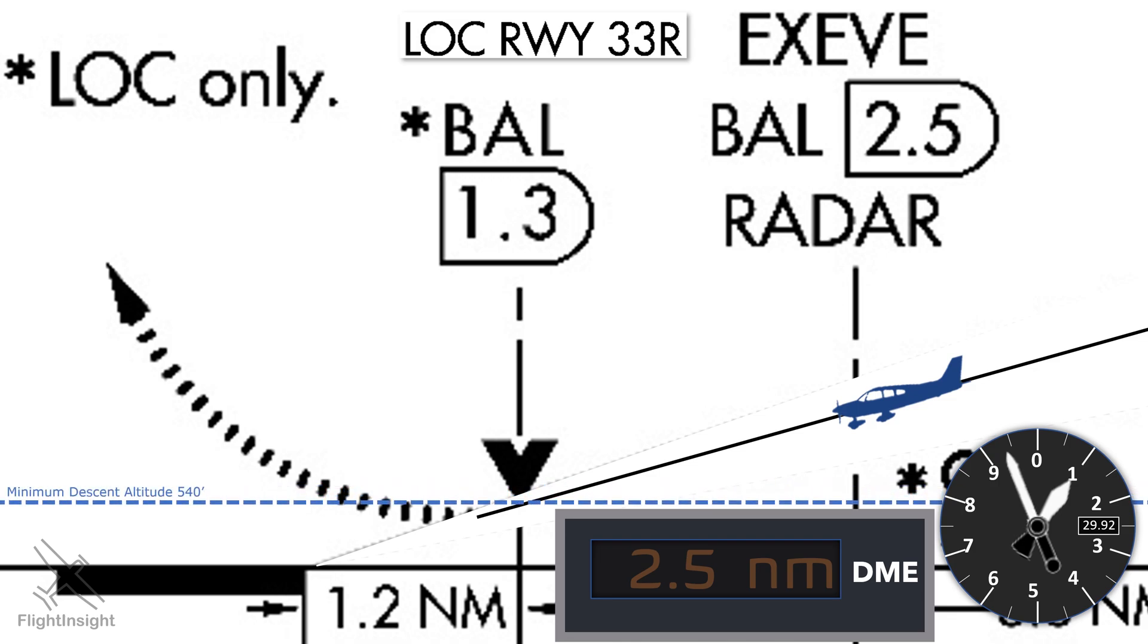The word minimum here means that we can't go below until we're in a position to land. The next point, the 1.3 DME, is the visual descent point, as noted by the black triangle. This is where we can make a normal descent to land from the MDA. So if we don't have the runway in sight by then, we should decide to go missed.